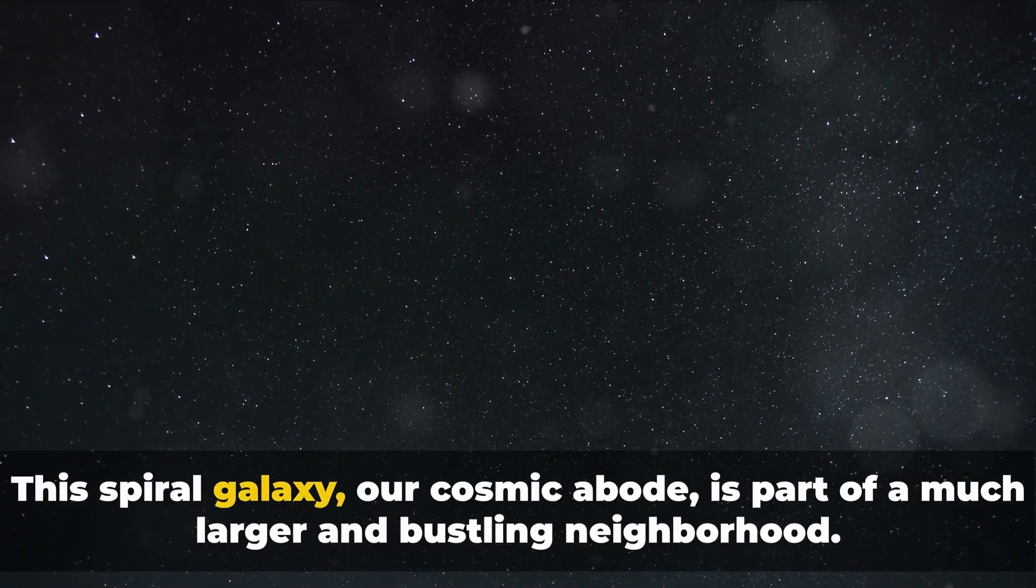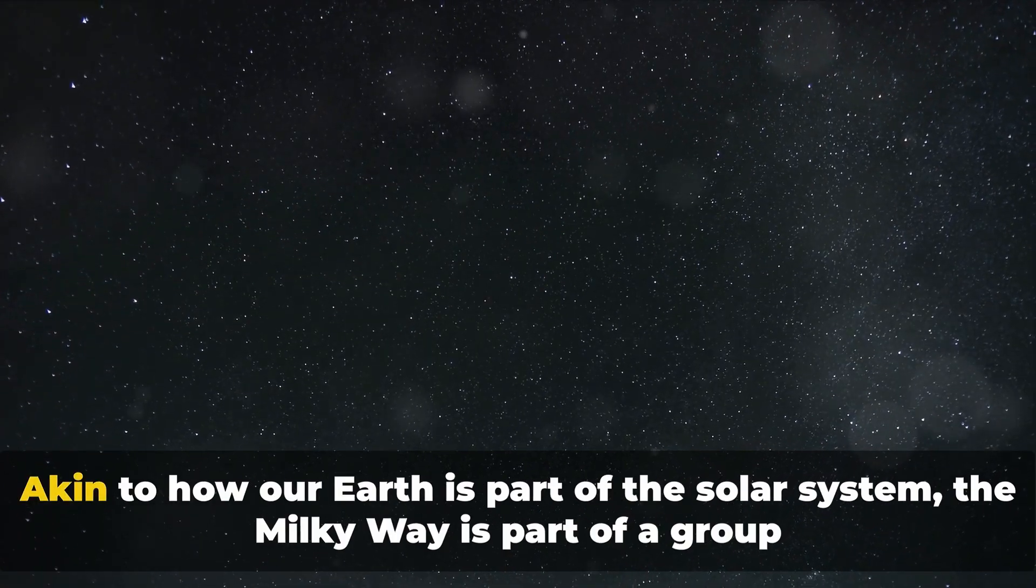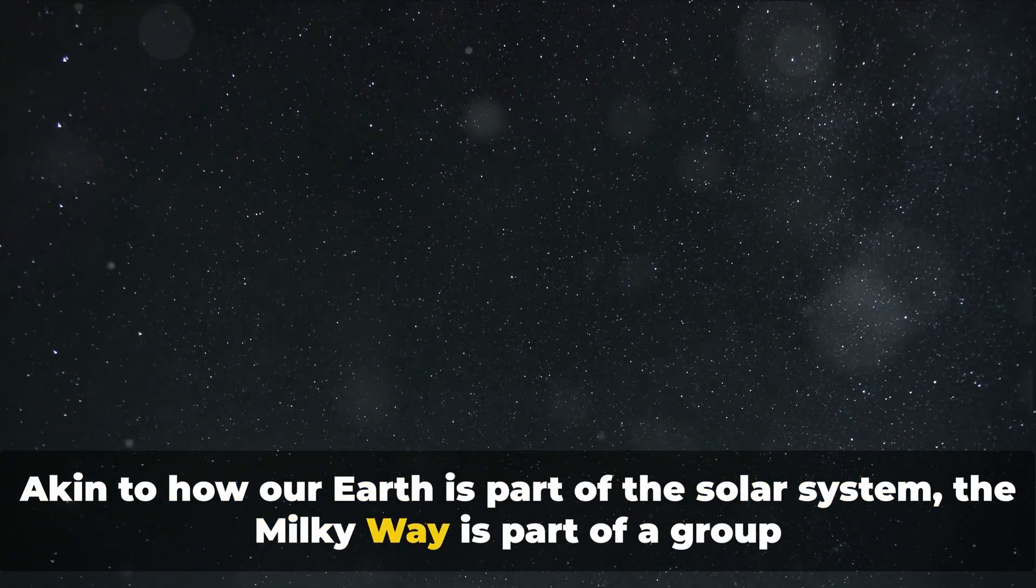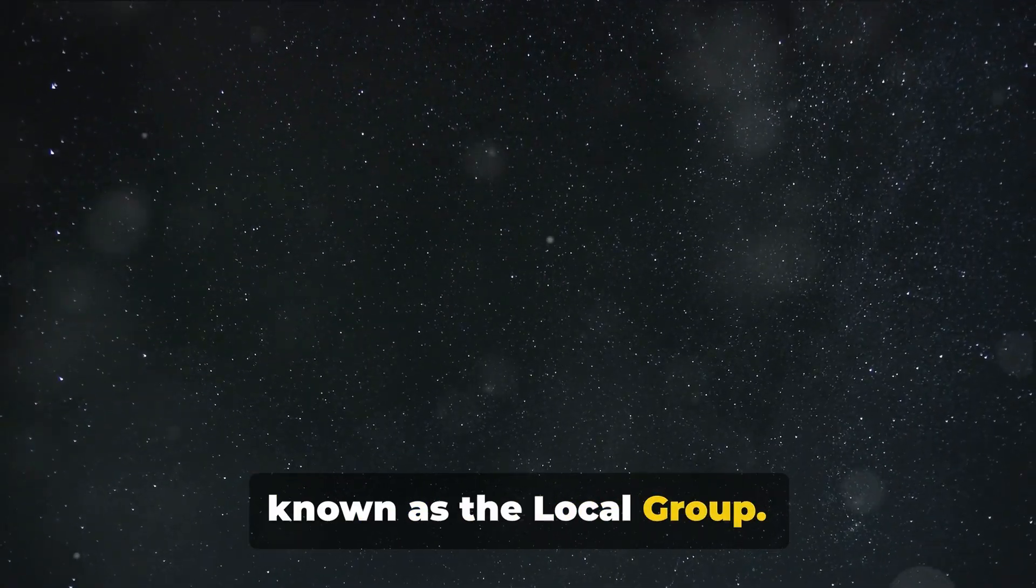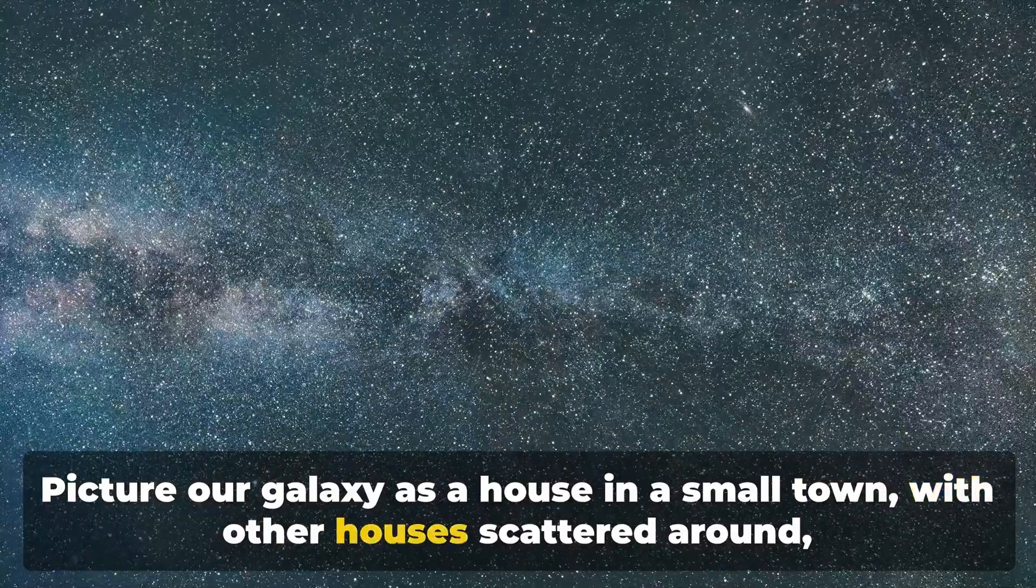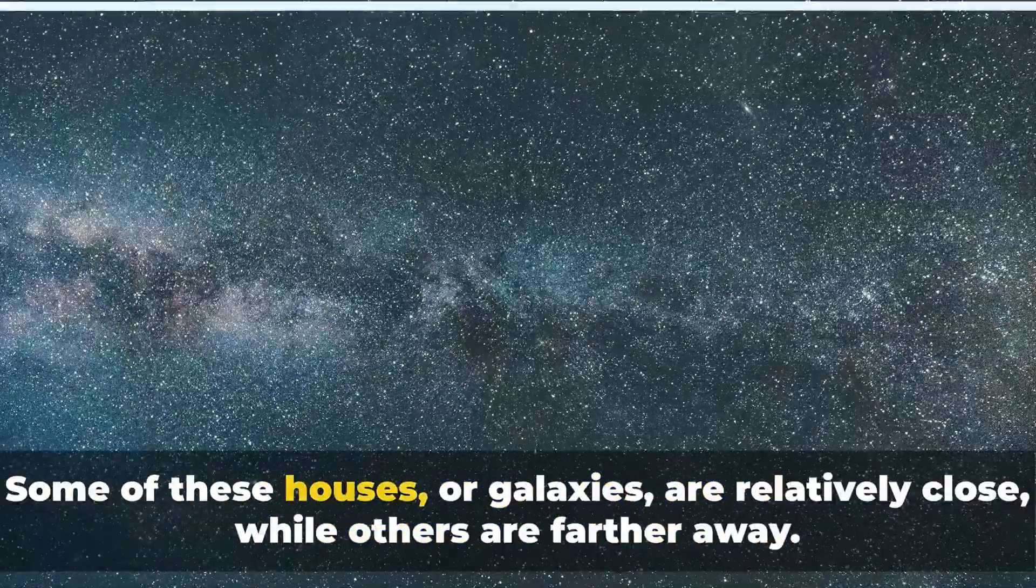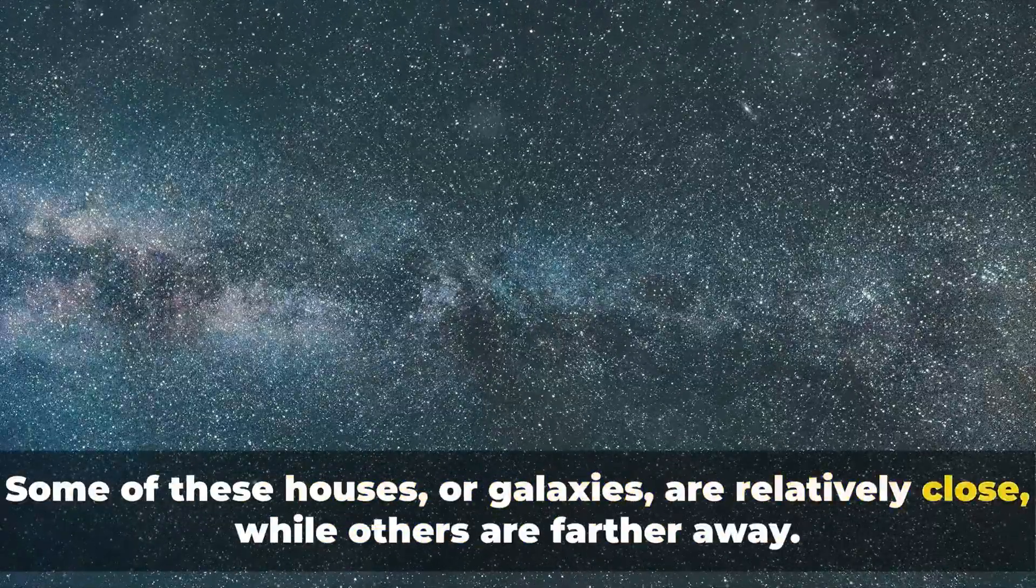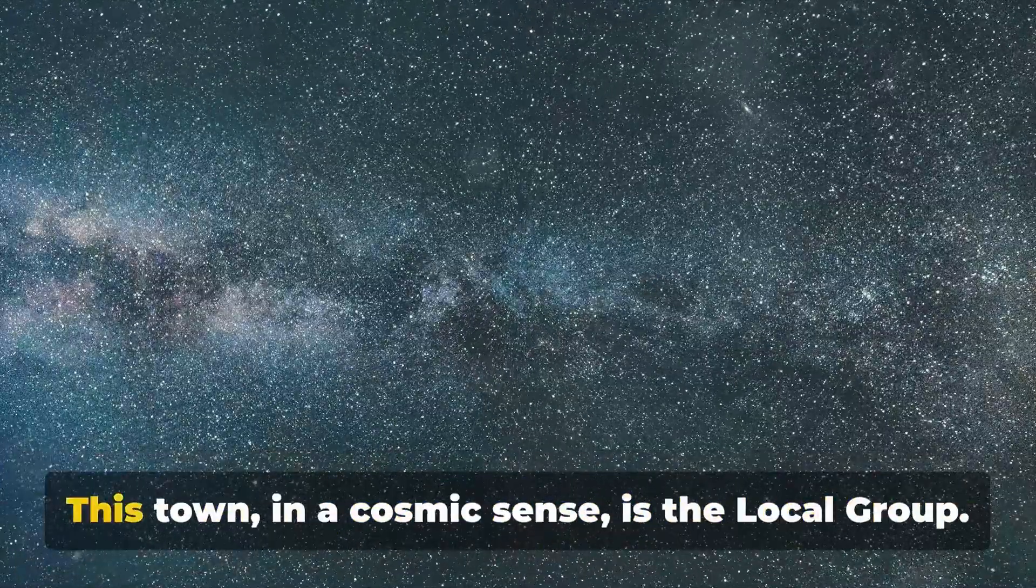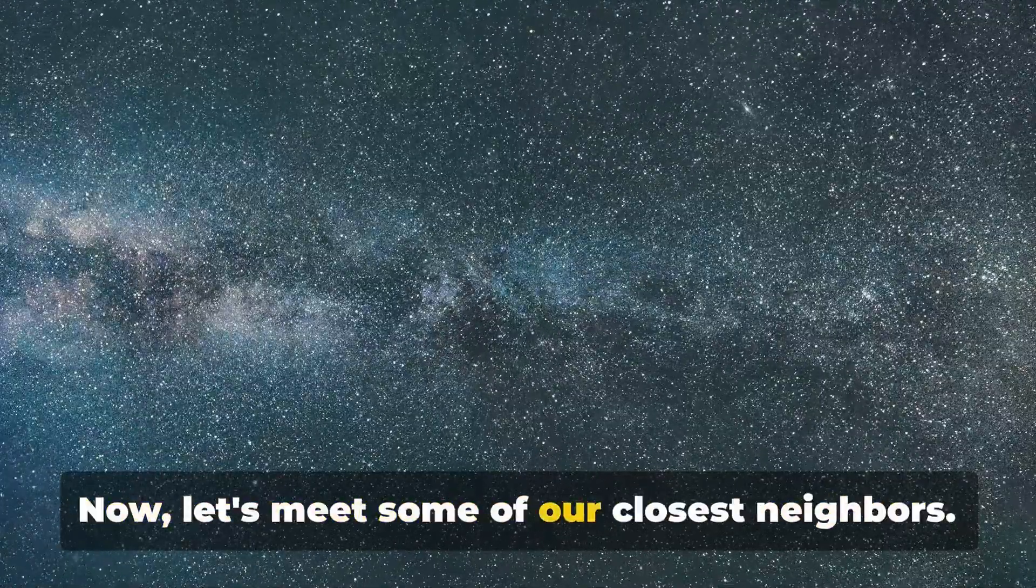The Milky Way is not alone in the cosmos. This spiral galaxy, our cosmic abode, is part of a much larger and bustling neighborhood. Akin to how our Earth is part of the solar system, the Milky Way is part of a group known as the Local Group. Picture our galaxy as a house in a small town, with other houses scattered around, each representing a different galaxy. Some of these houses or galaxies are relatively close, while others are farther away. This town in a cosmic sense is the Local Group.